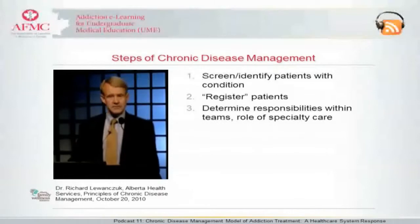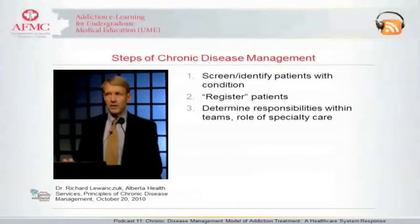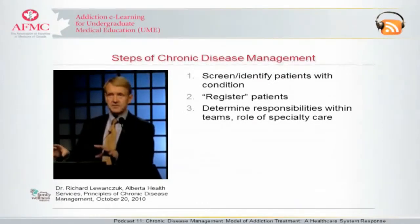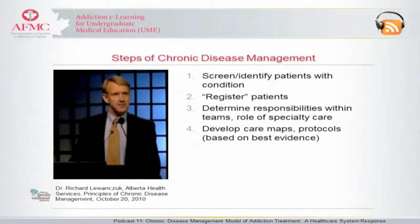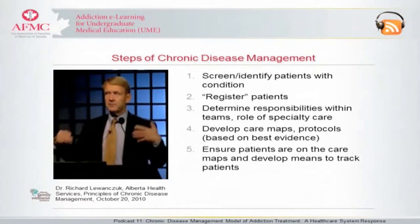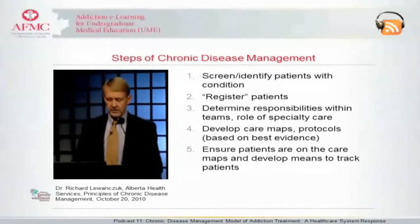We then decide who's going to do what — who's on first, who's on second. We decide what is the role of primary care, when might we need specialty care supports, when might we need the specialist, what does the doctor do, what does a practice nurse do, what does the pharmacist do, the physiotherapist, the social worker — so we determine responsibilities. Then we develop care maps or protocols based on best evidence, apply the best possible care in a consistent manner, and make sure that every one of those individuals is managed according to those principles.